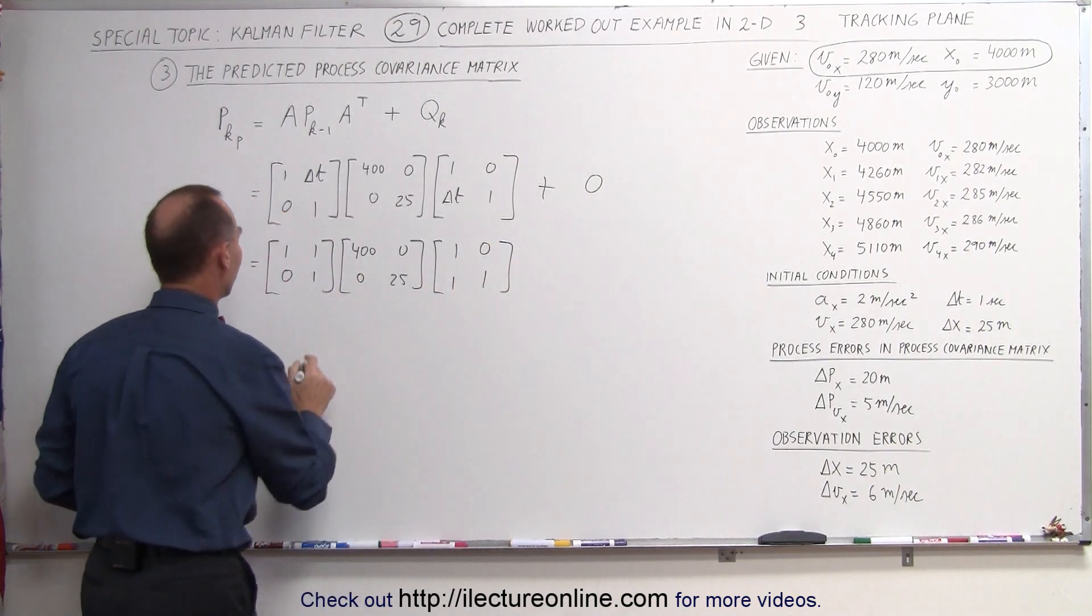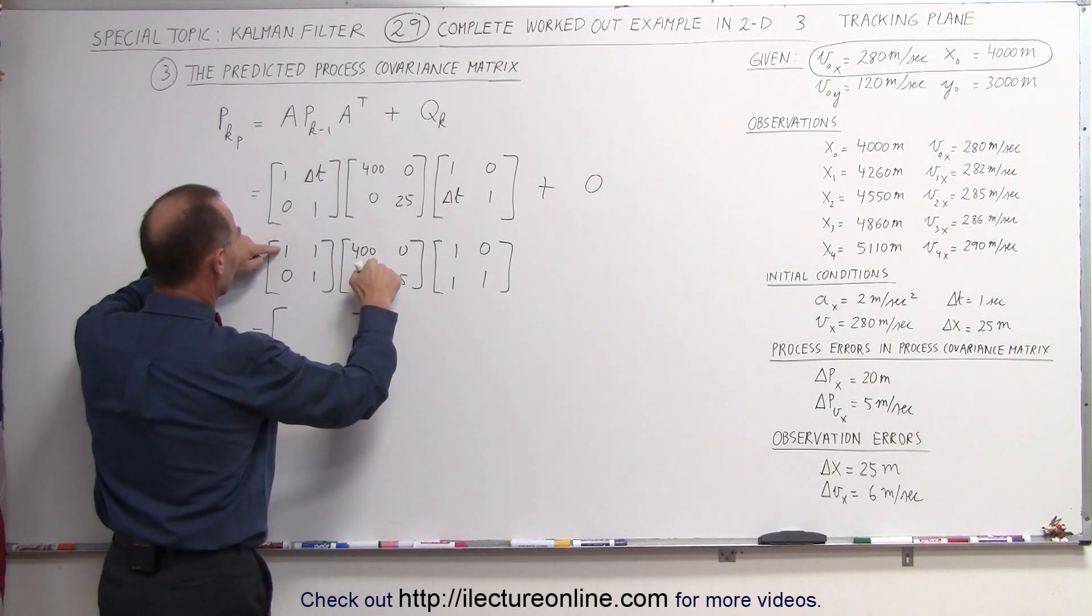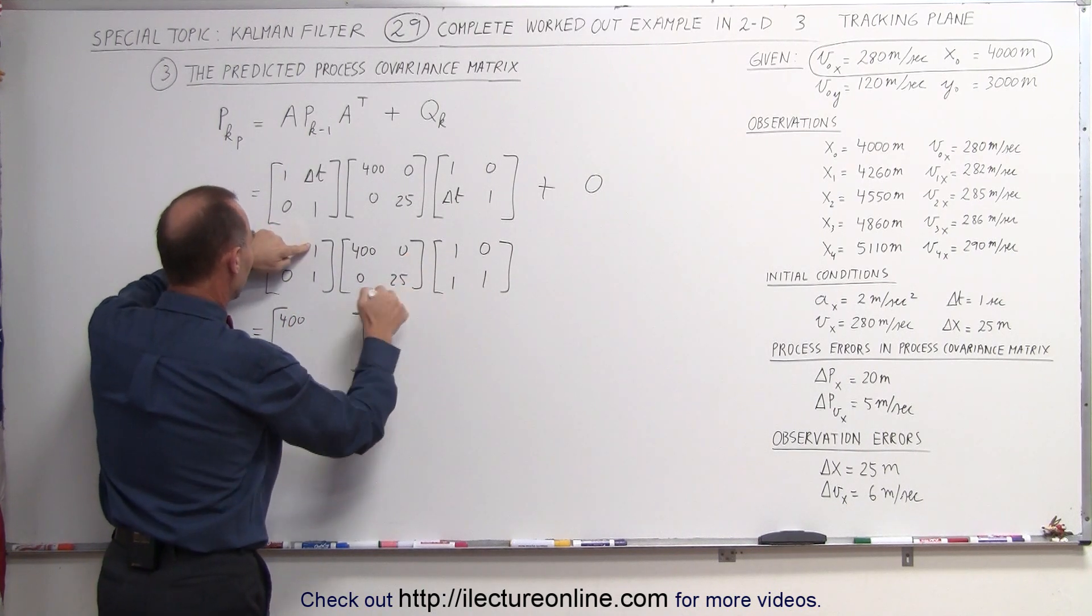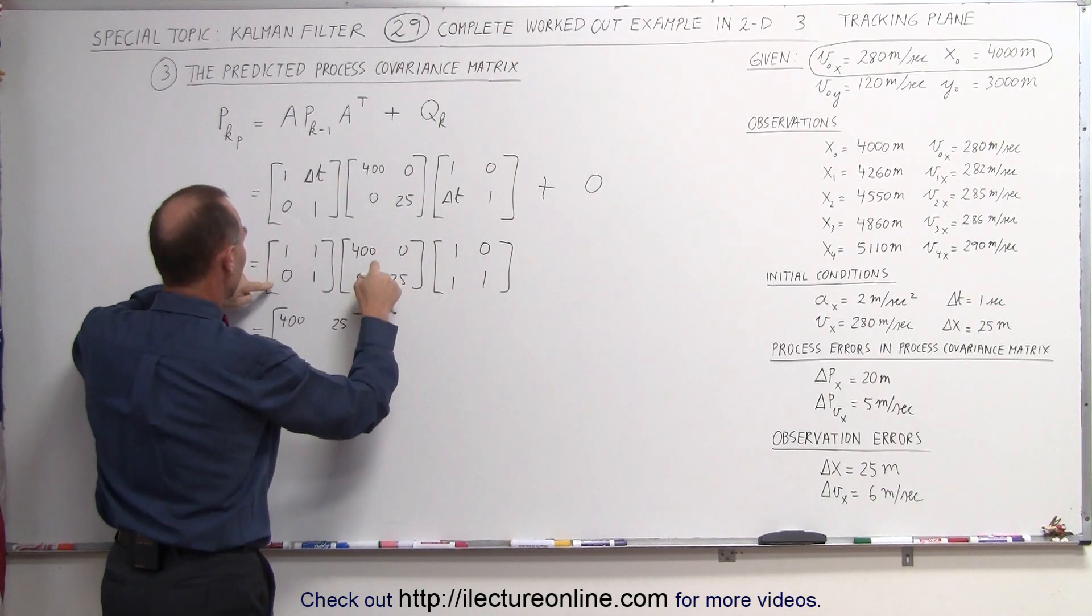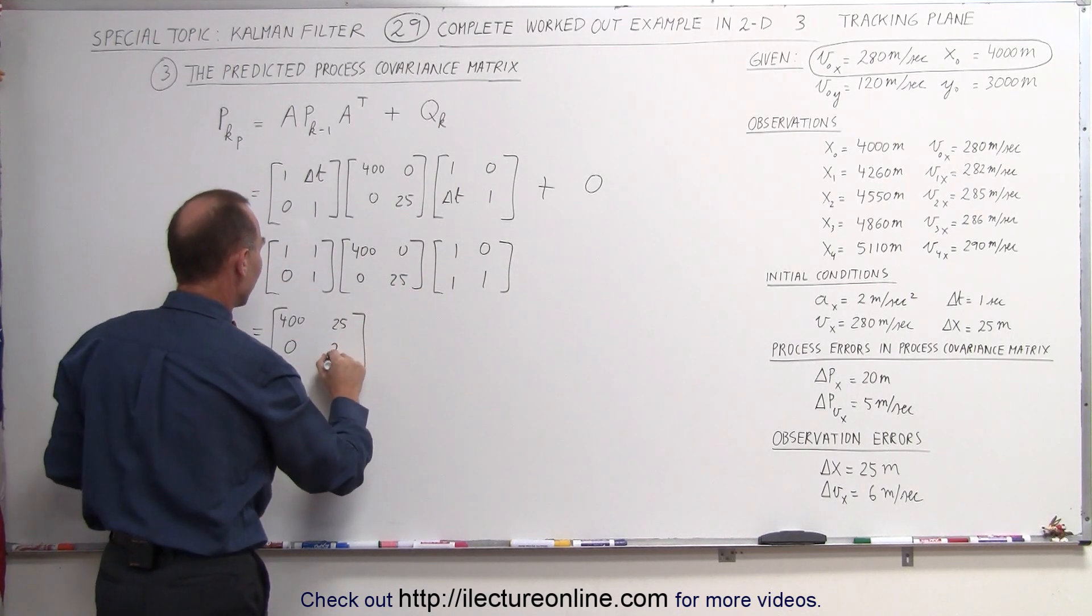Let's go ahead and multiply these two together first. This is equal to, we get a 2 by 2 matrix. This is 400 plus 0, this gives me 400, this is 0 plus 25, gives me 25 over here. This is 0 and 0, goes over here, 0 and 25.